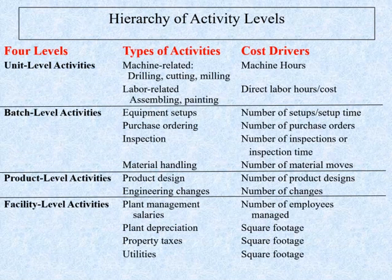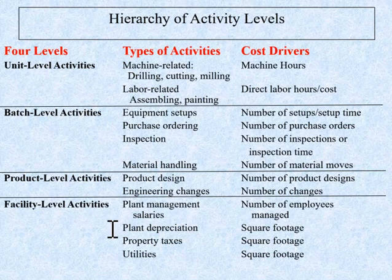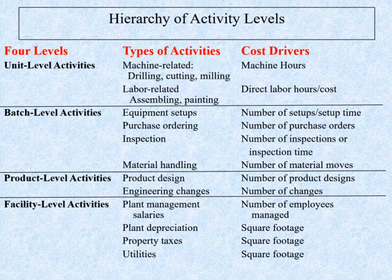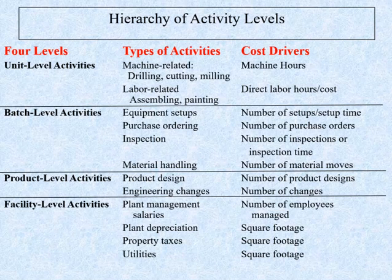Here is an example of the typical types of activities associated with each of the four levels, along with the appropriate cost drivers. This classification provides managers with a structured way of thinking about the relationships between activities and the resources they consume. In contrast, traditional volume-based costing recognizes only unit-level costs, and this failure to recognize the full classification of activities is one of the reasons why volume-based cost allocation distorts product cost.